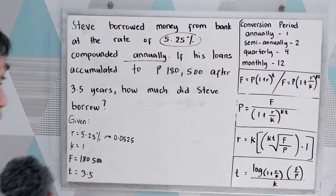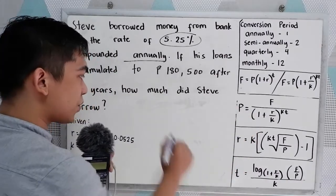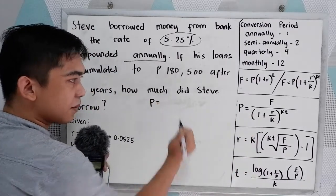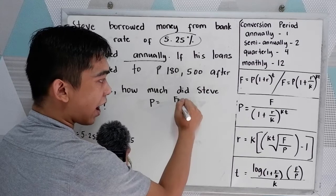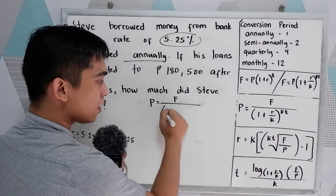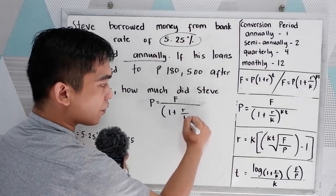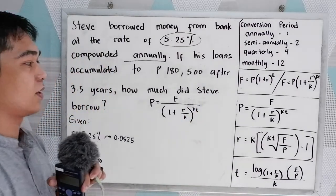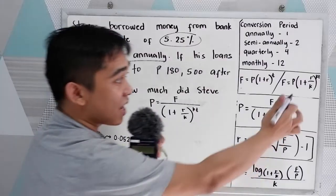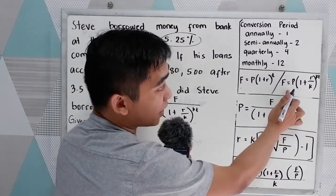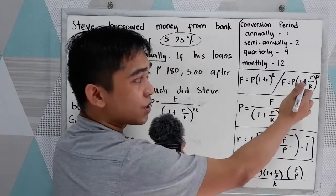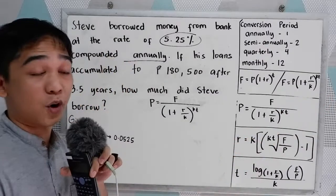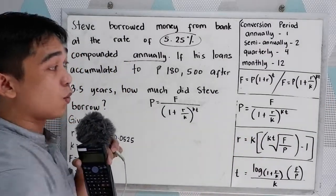Now, since we have the formula here, we're just going to write the formula. F all over 1 plus R over K raised to KT. Notice that it came from our future value formula. So just derive the formula if you don't know this one.